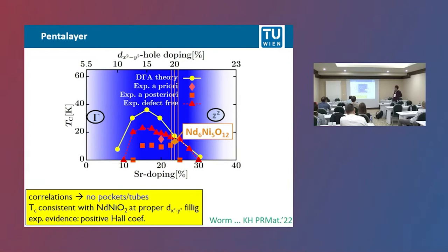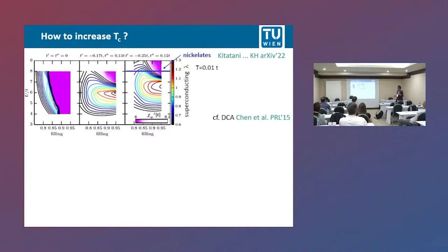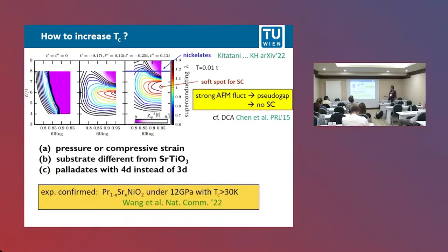The five-layer compound has a positive Hall coefficient. Of course — if you have no electron pockets, you only have the hole-like x²−y² orbital, and that gives rise to a positive Hall coefficient. Whereas for the infinite-layer compound with pockets at small doping, you have negative Hall coefficients, which one would also expect from the theoretical calculation. To increase TC, we see that one should have a lower Coulomb interaction to hopping ratio, which is possible by using pressure, and that has been spectacularly confirmed experimentally — at 12 GPa, you have nickelate superconductors with TC up to 30 Kelvin.